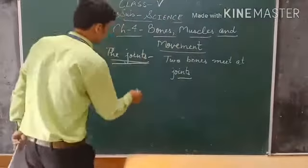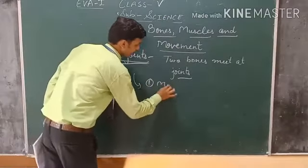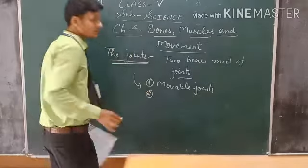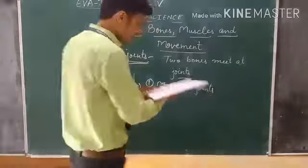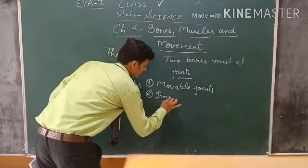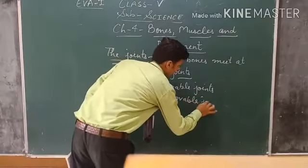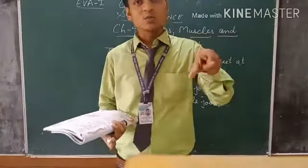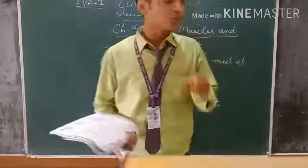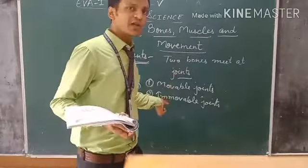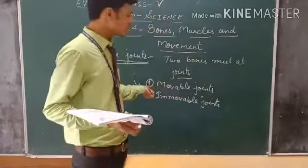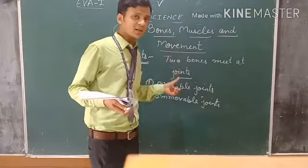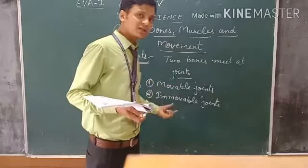There are two types of joints. The first one is movable joints and the second is immovable joints. Movable joints allow the bones to move, but immovable joints don't allow the bones to move.